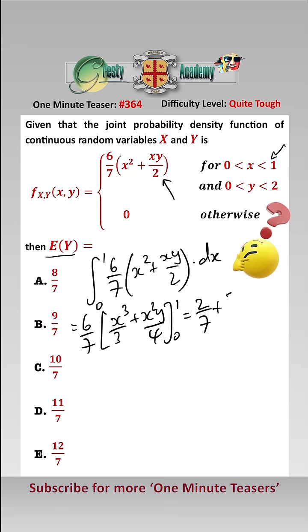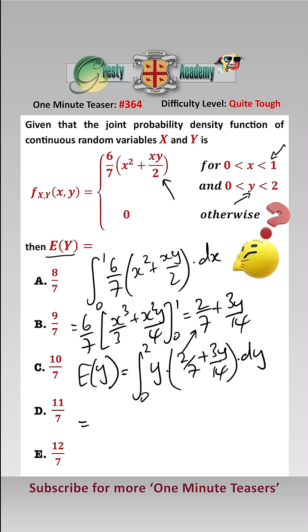Now the expected value of Y is equal to the integral between Y equals 0 and 2 of Y times (2/7 + 3Y/14) dY, and that equals y²/7 + y³/14.